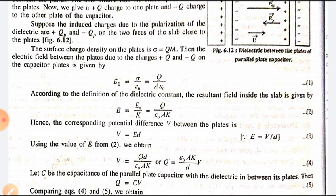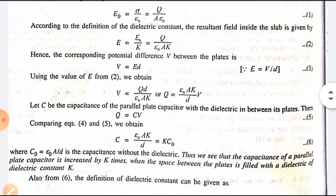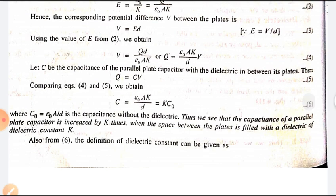Let C be the capacitance of the parallel plate capacitor with the dielectric between its plates. Then Q = CV, which is equation number 5. Comparing equations 4 and 5, we get C = ε₀AK/D, and we can write this as KC₀.